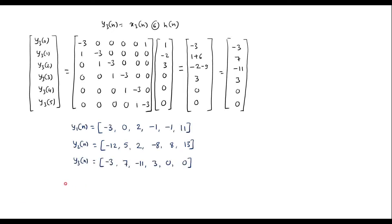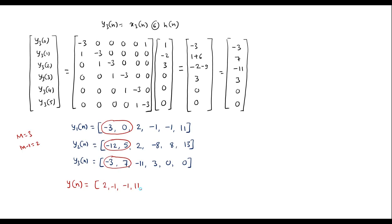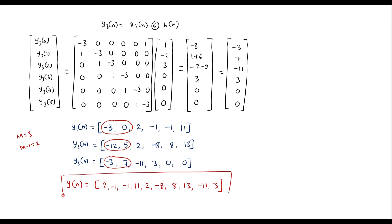To construct the final output y of n, in each output sequence we discard the first M minus 1 samples — here M equals 3, so we discard the first 2 samples from each. The remaining samples are: from y1: 2, minus 1, minus 1, 11; from y2: 2, minus 8, 8, 13; from y3: minus 11, 3 (the trailing zeros are ignored). So y of n is: 2, minus 1, minus 1, 11, 2, minus 8, 8, 13, minus 11, 3.